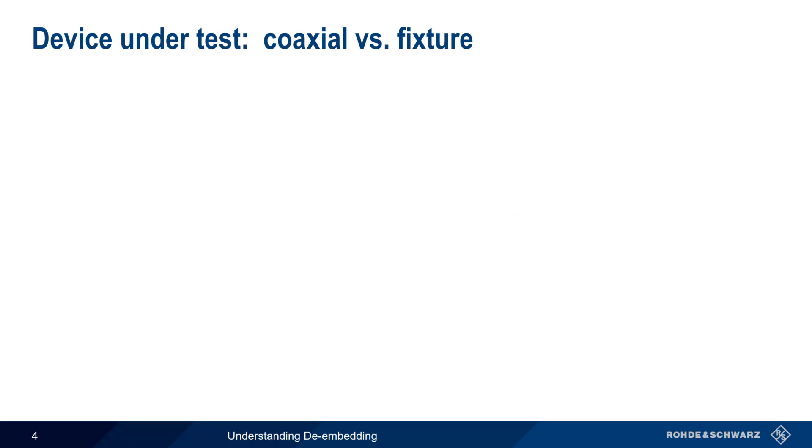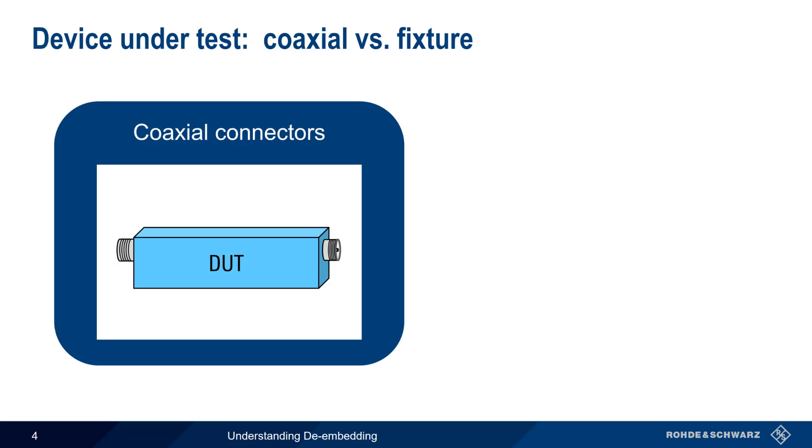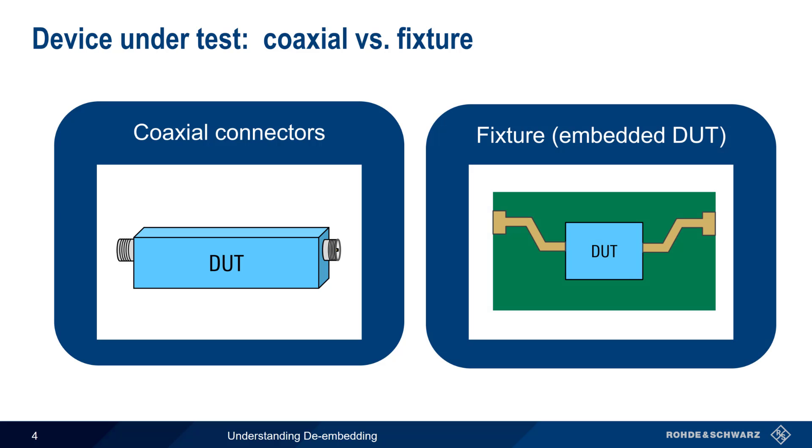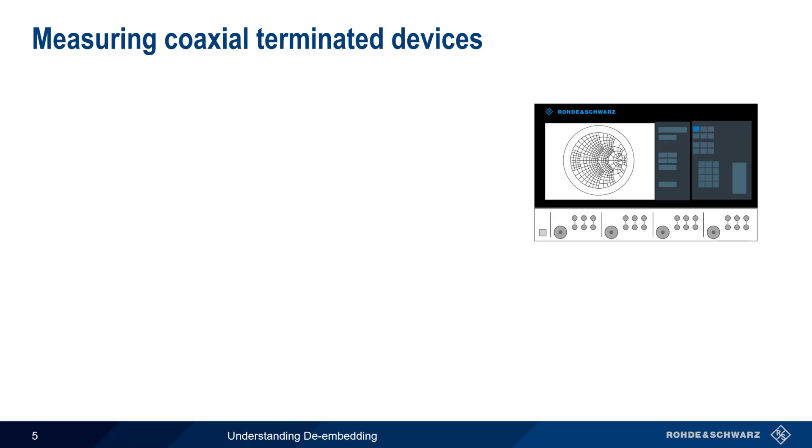Generally speaking, there are two different kinds of DUTs. Many DUTs have coaxial connectors, such as N- or SMA-type connectors. But sometimes, DUTs are embedded within a structure or a fixture, for example, on a printed circuit board.